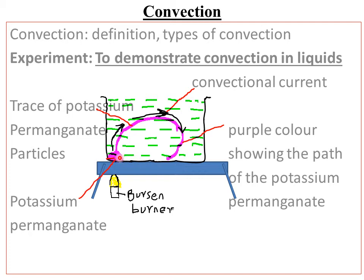In the experiment, the source of heat is at the bottom, and the potassium permanganate is placed at one end of the beaker. When the potassium permanganate is heated, a purple coloration rises up, tracing a circular path. After some time, the whole water becomes purple. Because the potassium permanganate moves in a circular path, this demonstrates the existence of convectional currents.